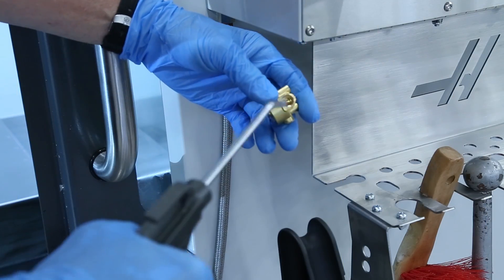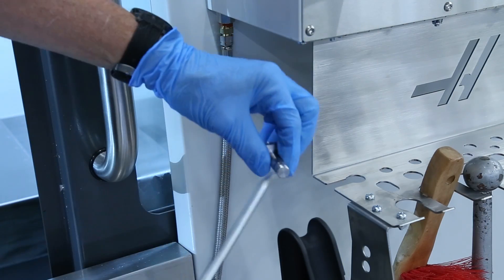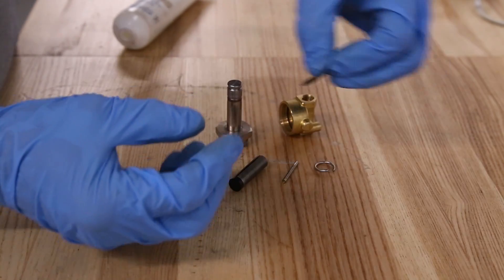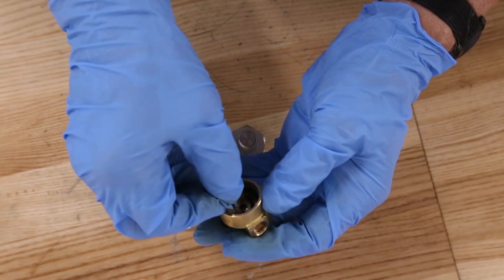Use the compressed air to blow out the inside of the manifold and to clear away any debris from the internal parts. Apply a thin coat of grease to the gasket and push it into the manifold.